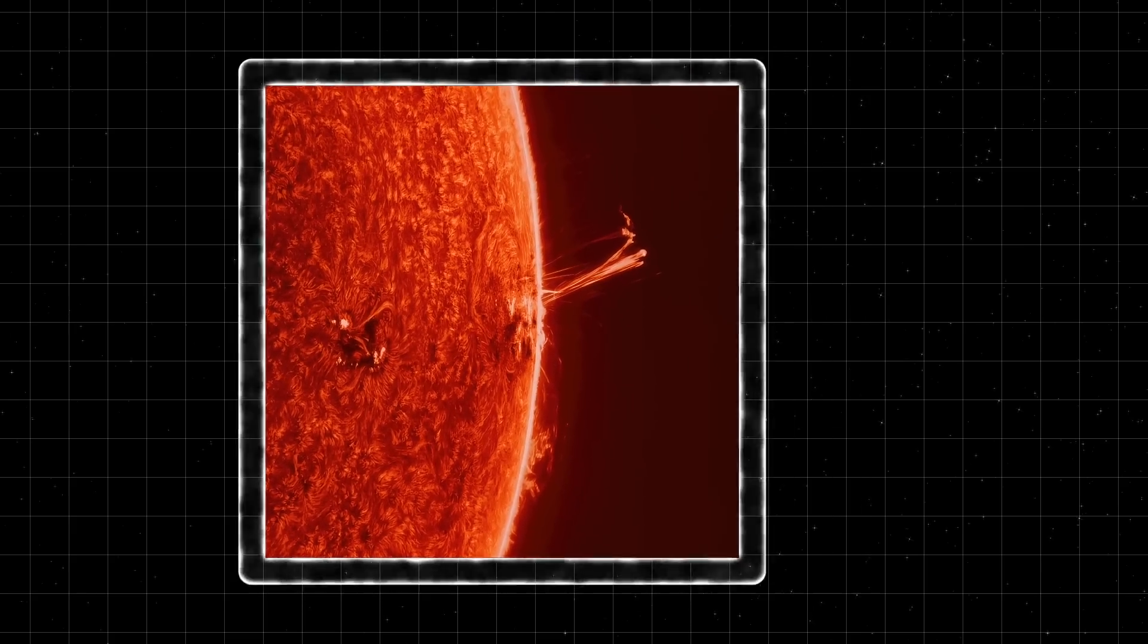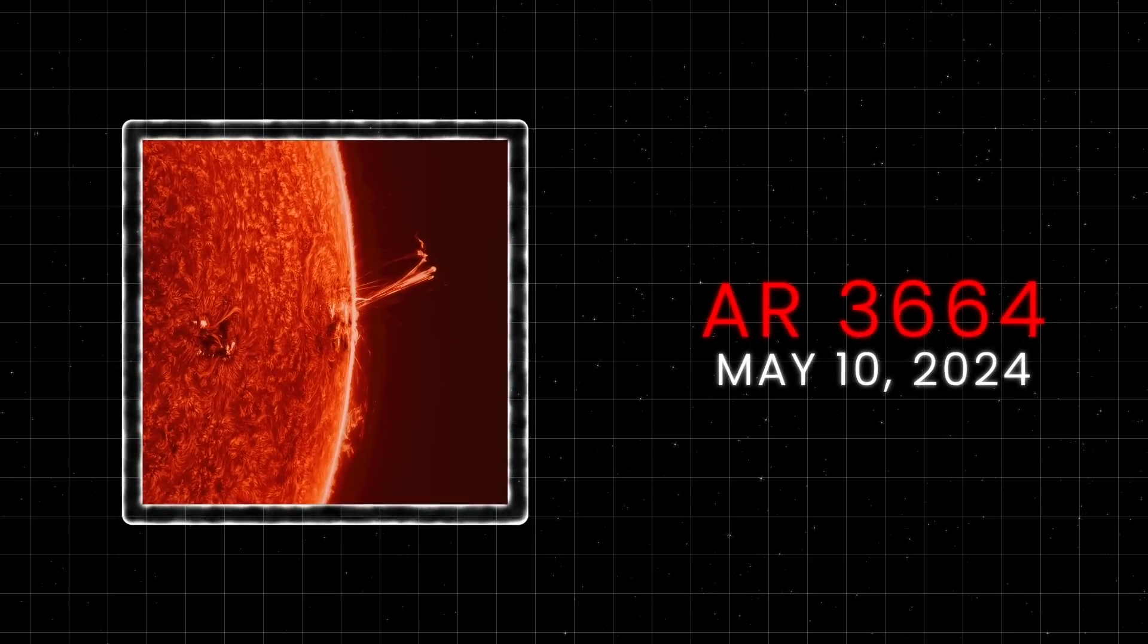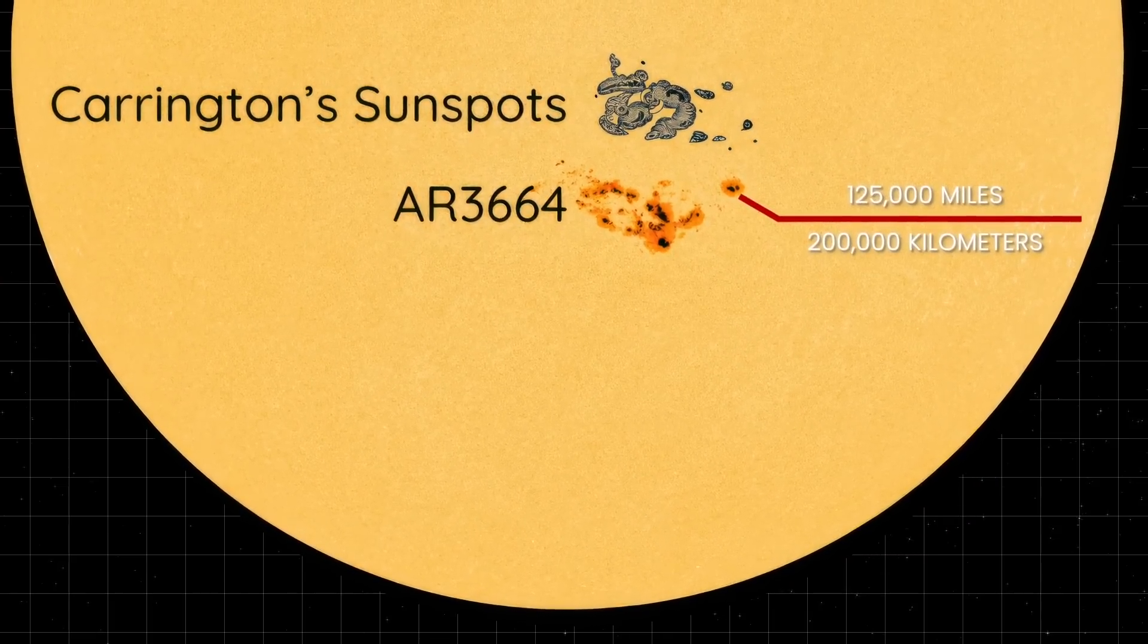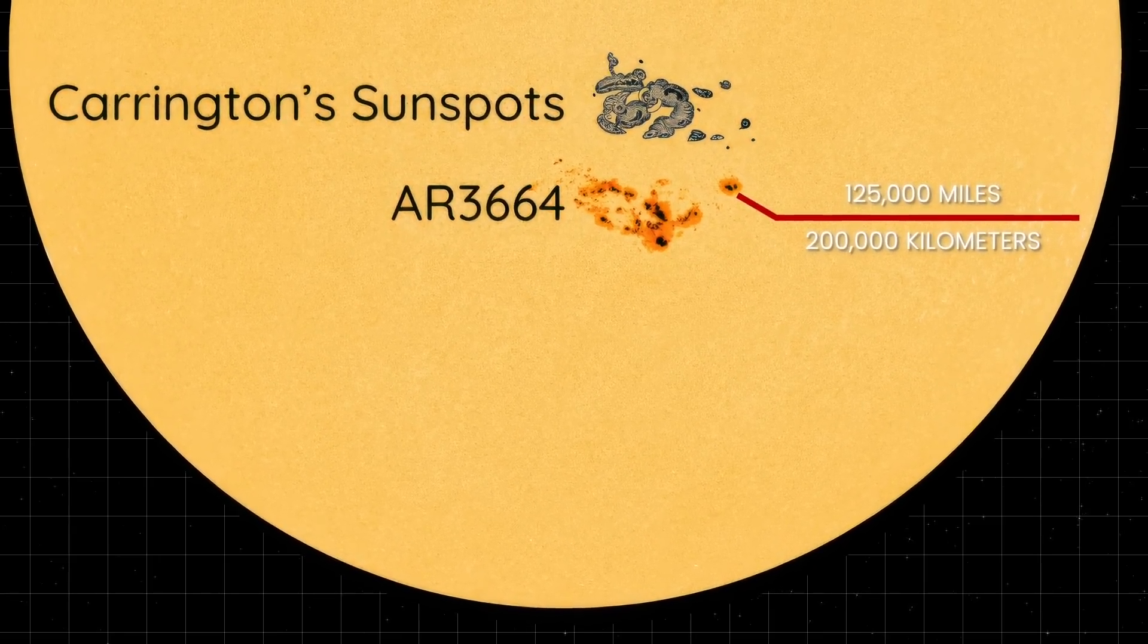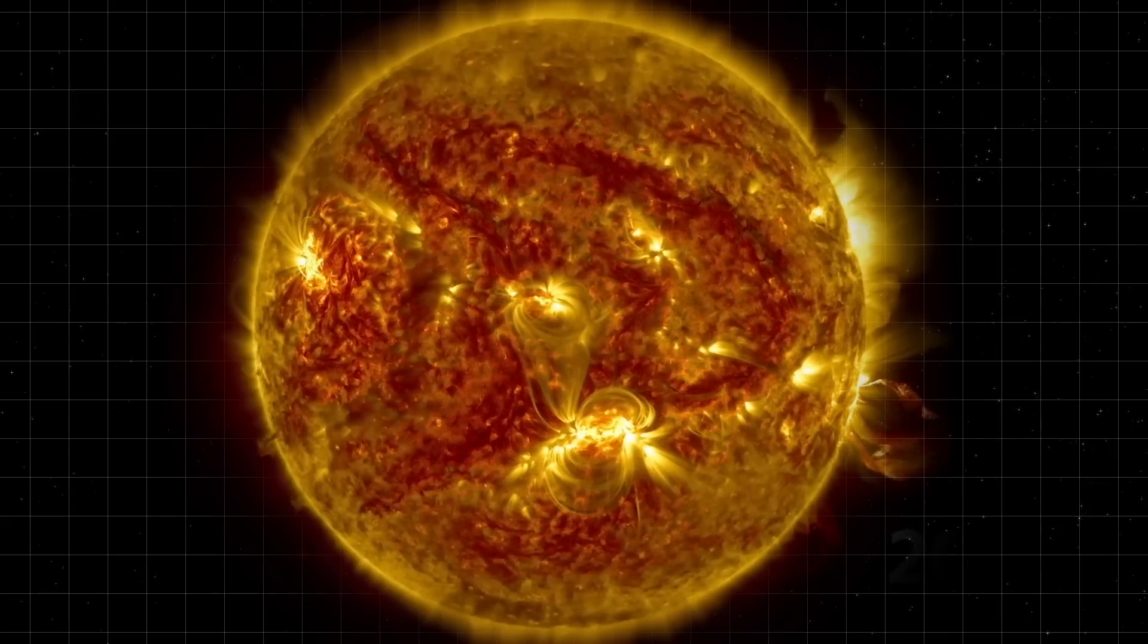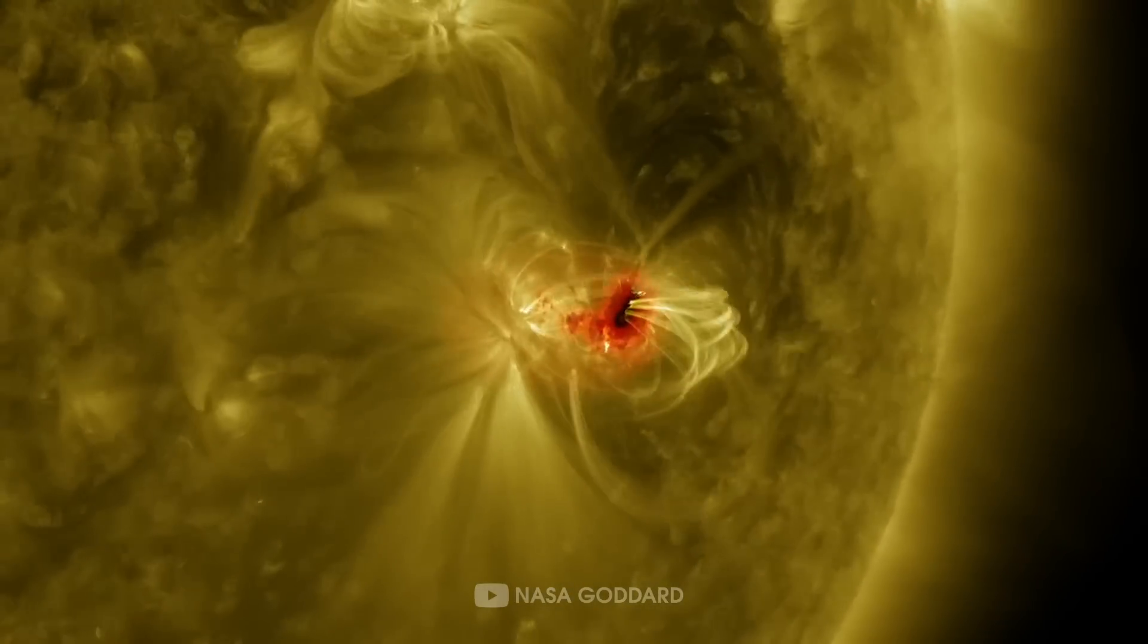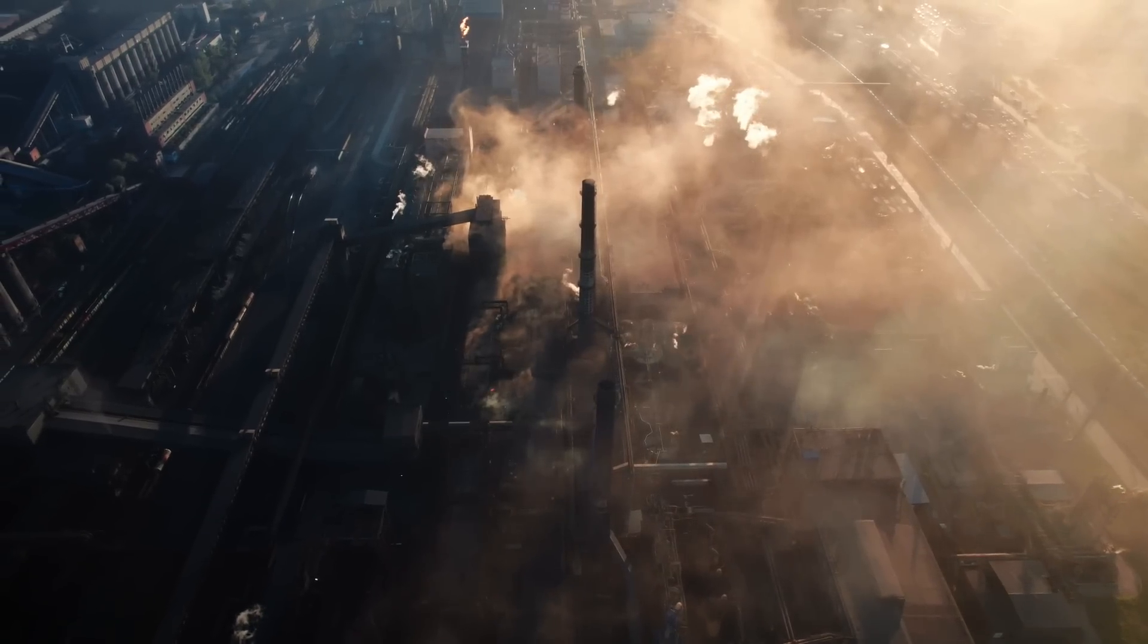On May 10, 2024, a sunspot named AR-3664 appeared on the sun, impressively large and visually comparable to the sunspot observed during the Carrington event of 1859. AR-3664 spanned nearly 125,000 miles across, which is about 15 times the width of Earth. This makes it similar in size to the Carrington sunspot. While the size of AR-3664 brought concerns about a potential repeat of the Carrington event, it appears that we may have avoided such a catastrophic outcome. Despite AR-3664's size and its production of powerful solar flares and CMEs, the resulting solar storms have not matched the severity of the Carrington event's impacts on Earth's technology and infrastructure. But that doesn't mean it can't happen.